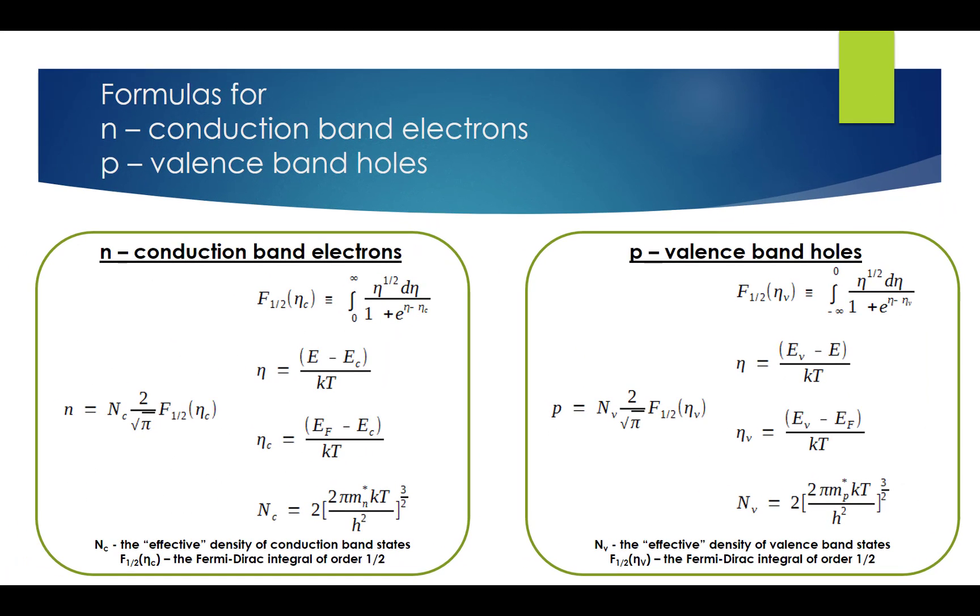By substituting G_C(E) and f(E) into the integration, we can obtain the formulas for equilibrium electron concentration n and equilibrium hole concentration p. The simplification process on the upper integration limit makes use of the fact that the integrand in question falls off rapidly with increasing energy, and is essentially zero for energies only a few kT above E_C.